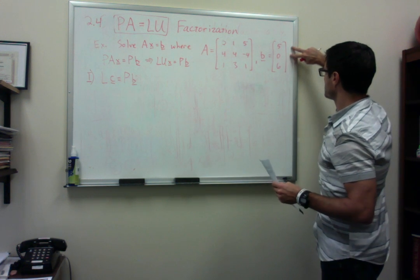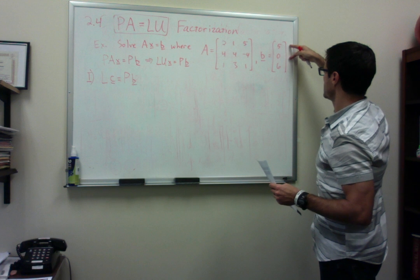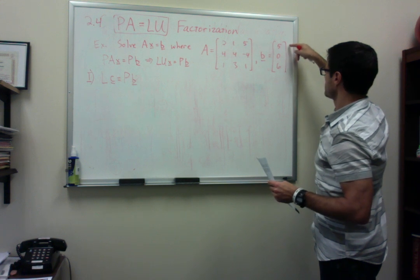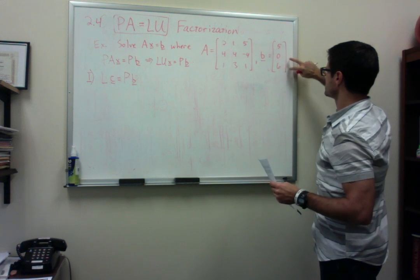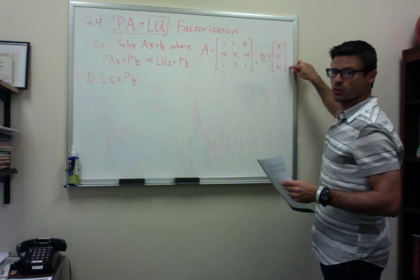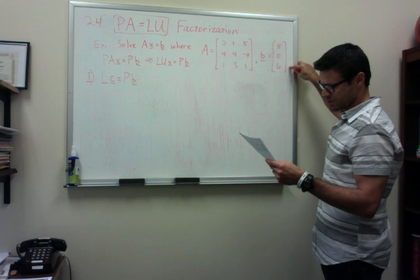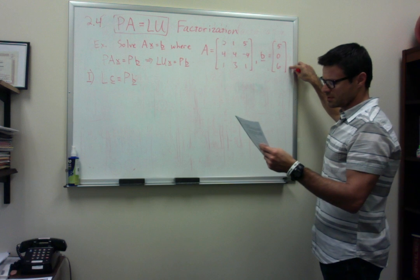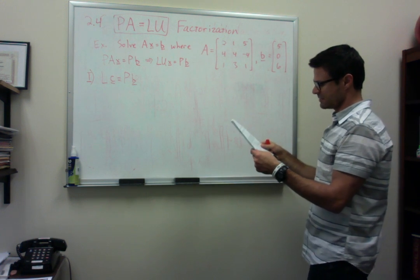So if you were to do that with B, we would switch zero and five. So we had a zero up here, and then we would switch five and six. So I believe it should be zero, six, five, if you do P times B, and you can check that out. But it should be zero, six, five. So P times B is the vector zero, six, five.